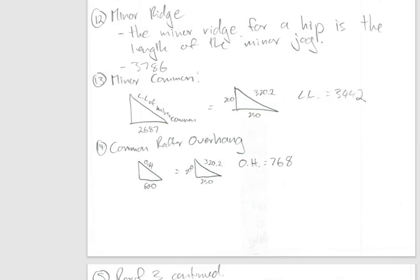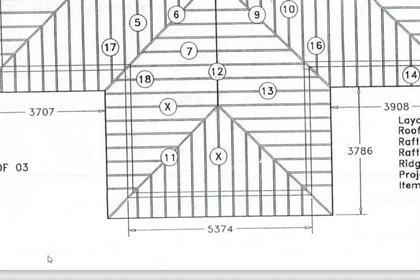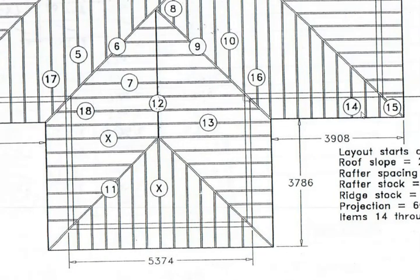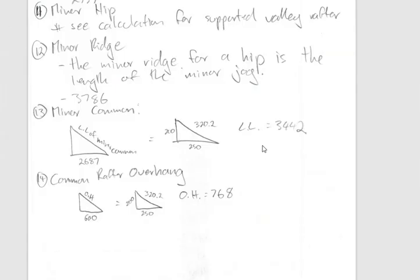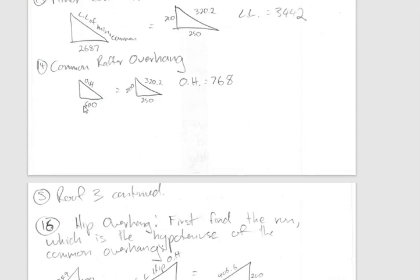Getting down to the overhangs: numbers 14 and 15 are straightforward. Number 14 is the common overhang for anything that isn't intercepted and comes off the plate at 90 degrees. Number 15 is the hip overhang, calculated the same way as the main hips and commons. The projection on the horizontal from the building is 600 millimeters — we turn that into the line length using our triangle and get 768.